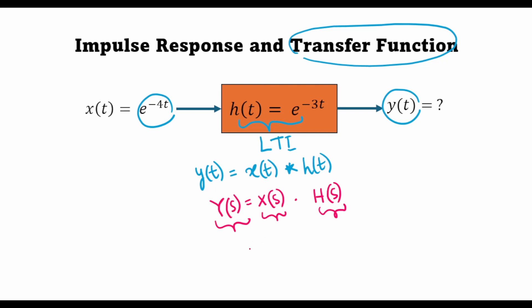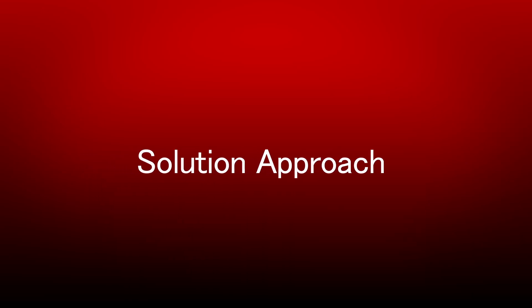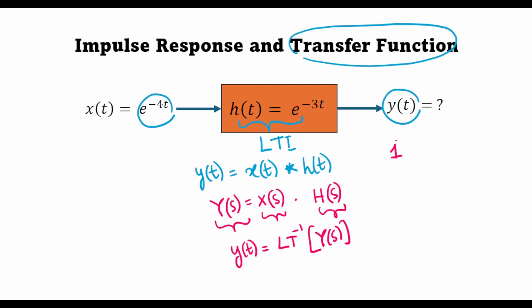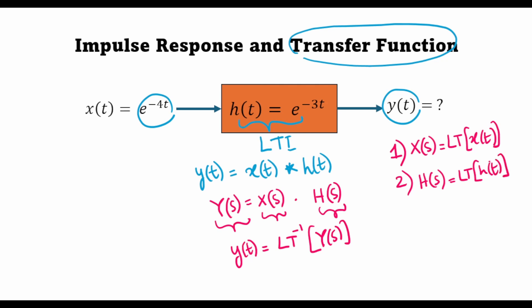Once we have Y(s) we can simply take the inverse Laplace of Y(s) in order to find out the time domain response y(t). So this is how we will proceed: we will first find the Laplace transform of the input x(t), next find the transfer function H(s) by taking the Laplace transform of the impulse response h(t), then multiply the two to find Y(s), and finally take the inverse Laplace of Y(s) to find y(t). So let's proceed.